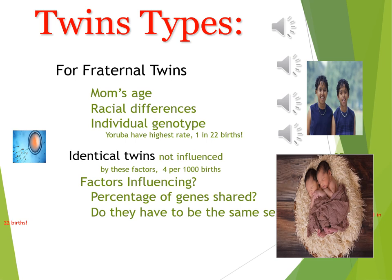Fraternal twins share on average 50% of their genes in common — the same as any other set of siblings — and can be of different sexes. Identical twins share exactly 100% of their genetic material and must be the same sex. Prenatal development is defined as lasting from conception through delivery — the period of gestation. The gestation periods of different species vary widely, from about 20 days for mice to 18–22 months for elephants.